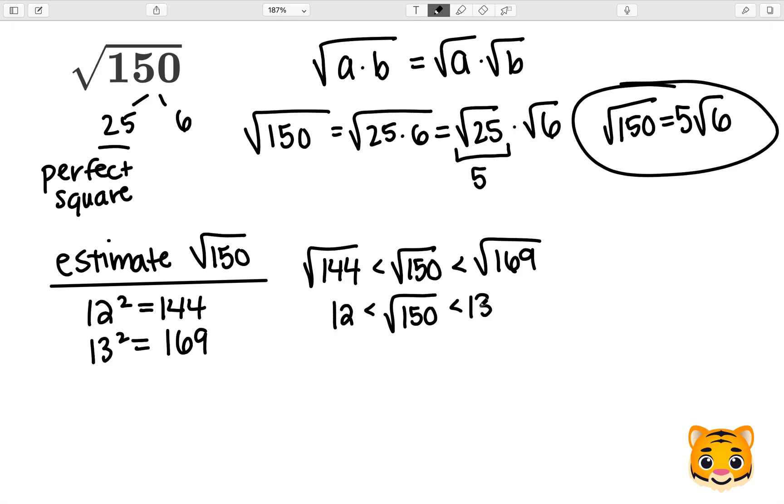In order to find the value that the square root of 150 is closest to, we can use the difference between 150 and our perfect squares. So we will do 150 minus 144 to give us 6, and then 169 minus 150 to give us 19. As you can see,